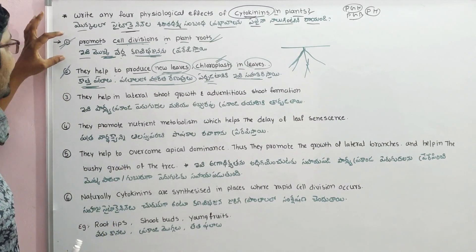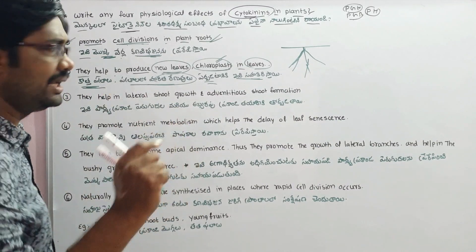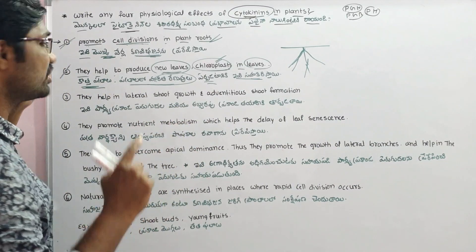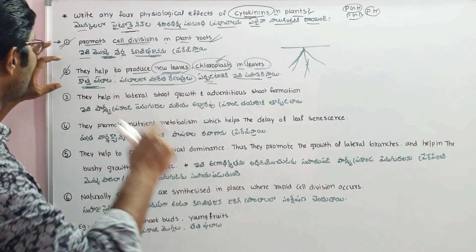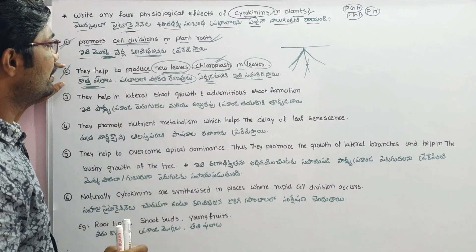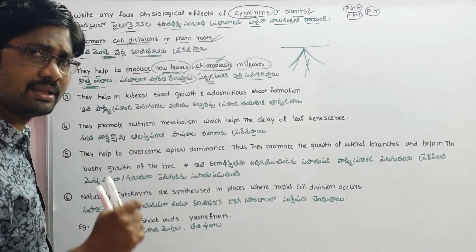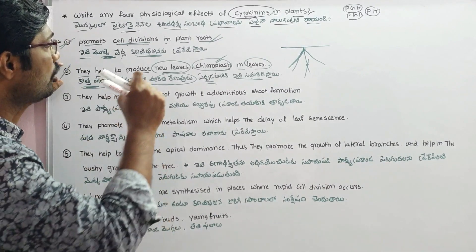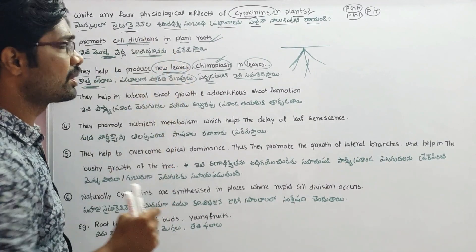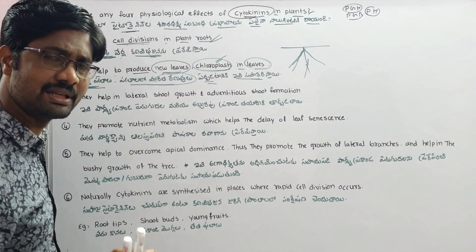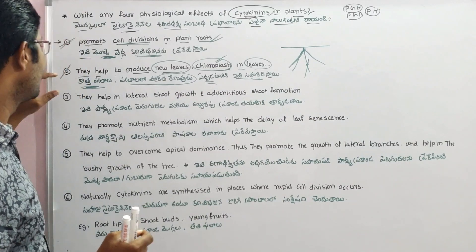To summarize the first two effects: first, cytokinins promote cell division; second, they help produce new leaves and chloroplasts in those leaves.